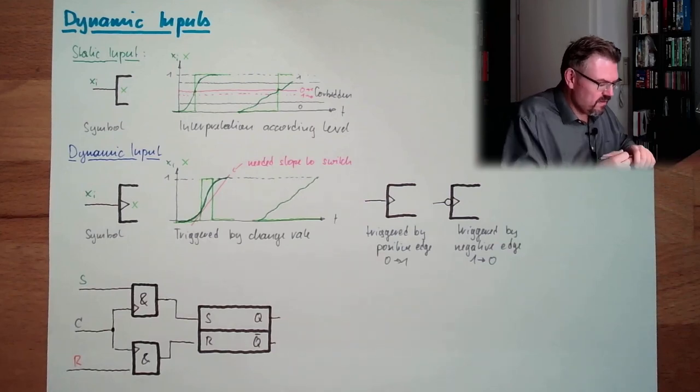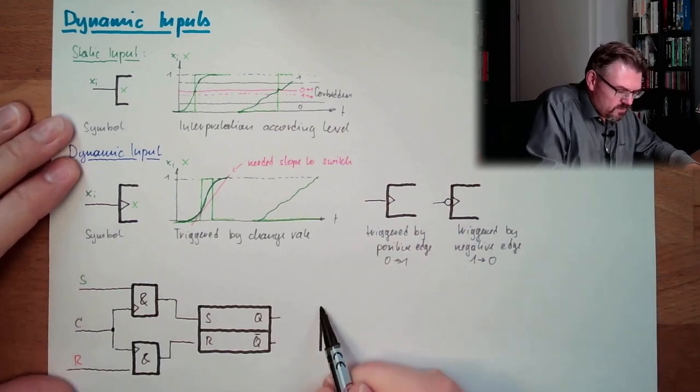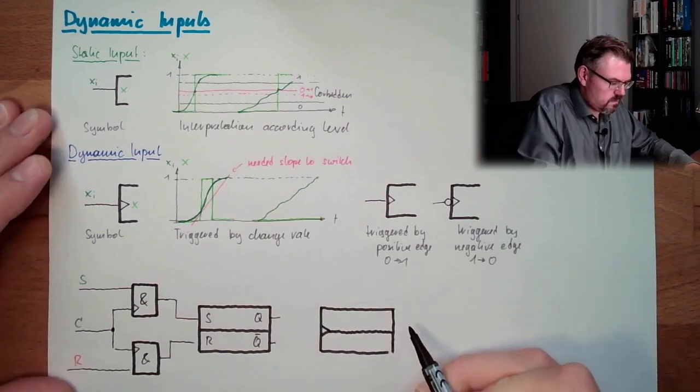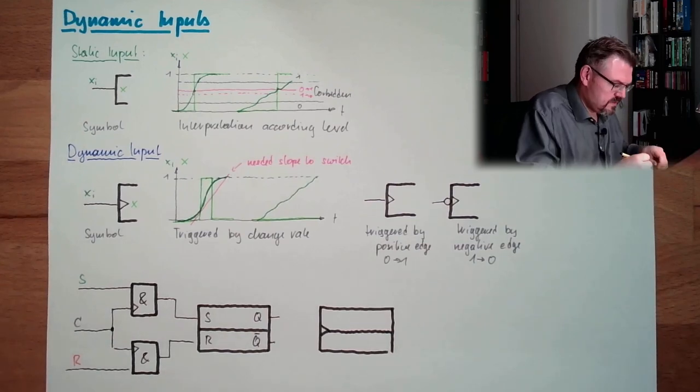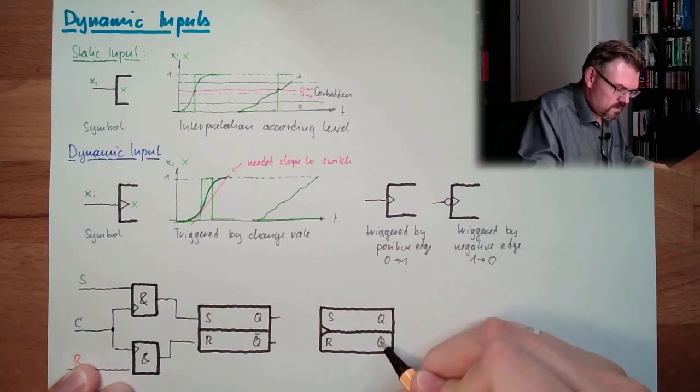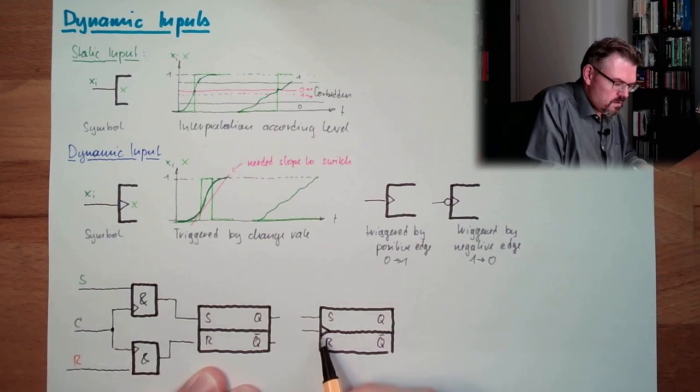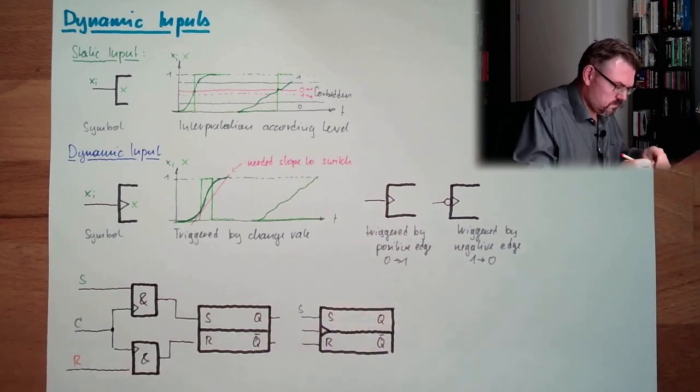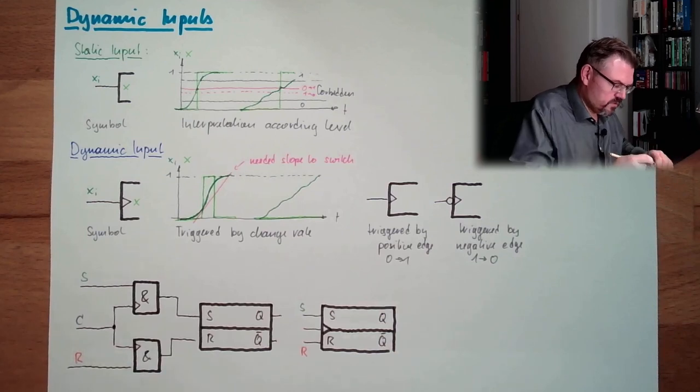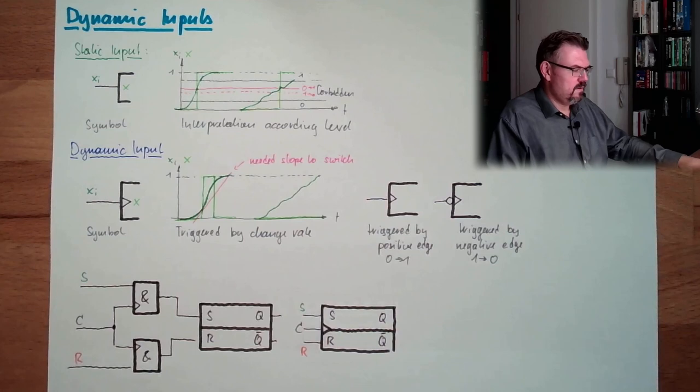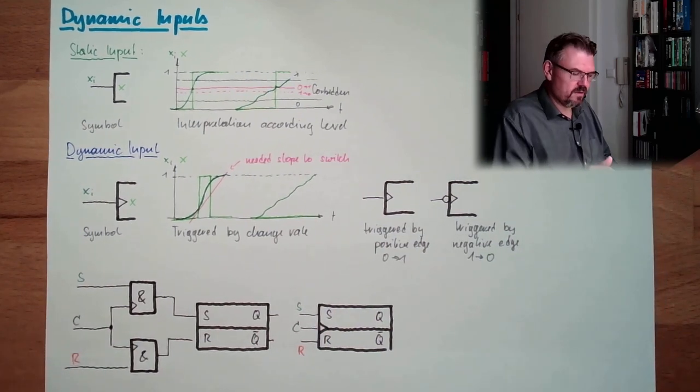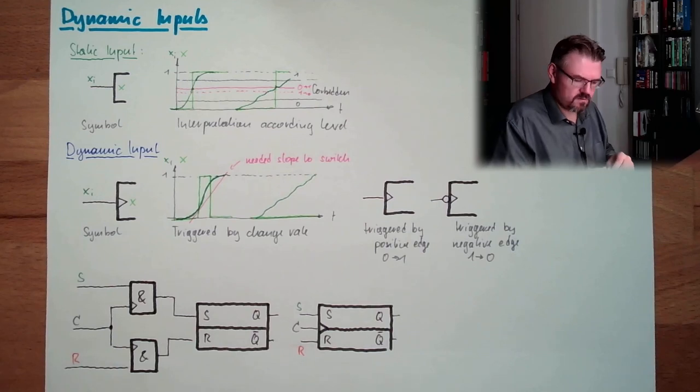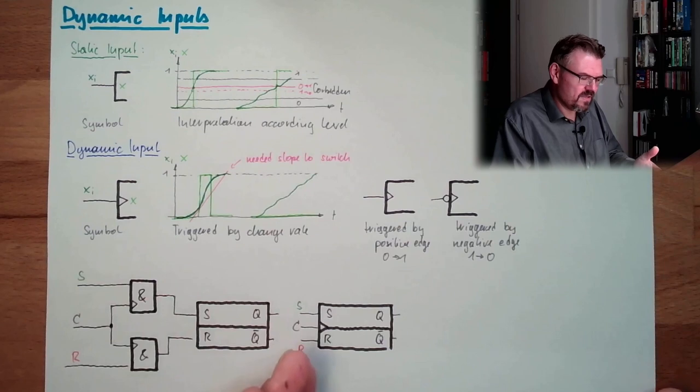That's it. This thing has even a symbol, its own symbol, looking like that. We have here S, R, Q, not Q, and C. This is an edge-triggered memory. People also call them flip-flops, edge-triggered flip-flops. What a flip-flop exactly is, we will see. But this is an edge-triggered memory.